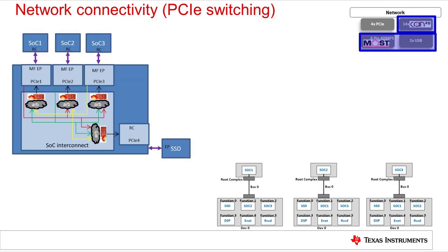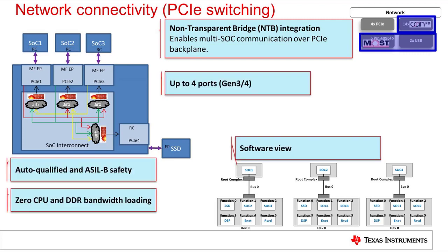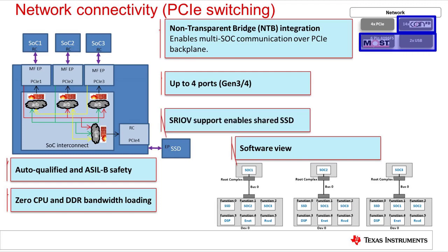The switch fabric in Jacinto 7 supports direct high-performance master access from one PCIe controller to the other controllers. This effectively enables the implementation of a non-transparent bridge, or NTB, which allows multiple SoCs to communicate with each other over a PCIe backplane. These SoCs can also share resources on the Jacinto 7 device. This diagram depicts three SoCs utilizing three of the Jacinto 7 PCIe ports in endpoint mode effectively as a bridge to communicate between all devices, and to share a common SSD storage device on the fourth PCIe controller configured as a root complex. The SRIOV feature is also leveraged to allow robust high-performance sharing of the SSD resource without access conflict.